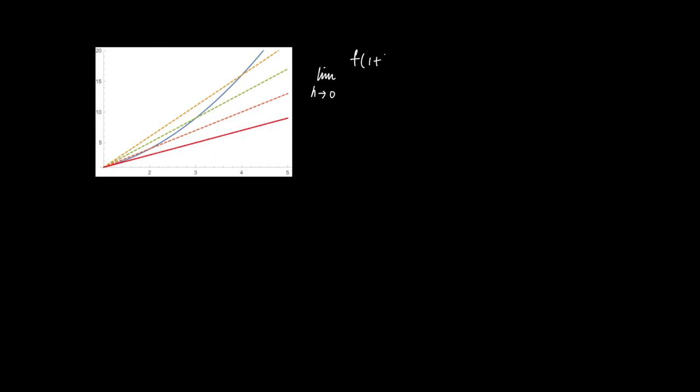So, we try to calculate the limit for h to 0 of f(1+h) minus f(1) divided by h. So, we get the limit of h to 0 of f(1+h), well, f(x) is x squared, so f(1+h) is (1+h)² minus 1 divided by h equals,